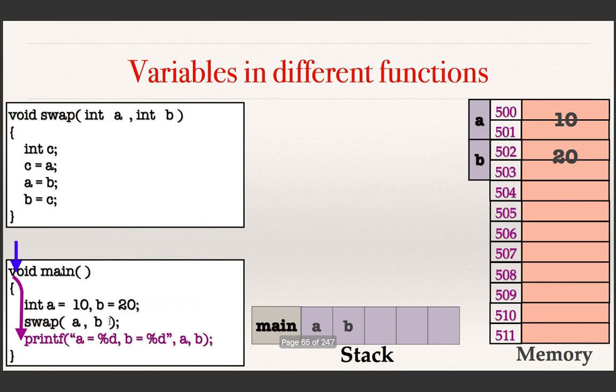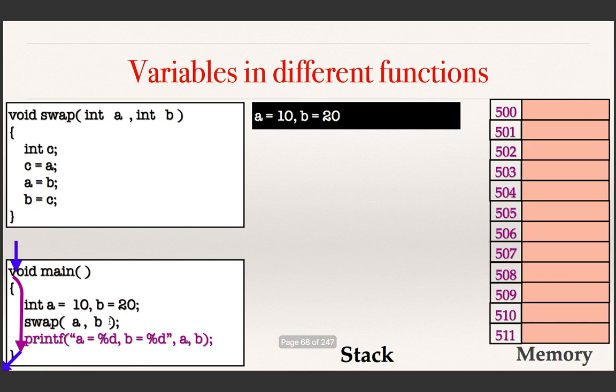Control returns to main, which comes to the printf statement and tries to print a and b. Through the stack, it finds the values of a and b in main's memory, which are still 10 and 20. So it just prints 10 and 20. The swap effect is not visible or accessible to the main function.